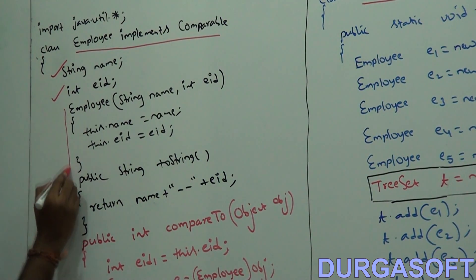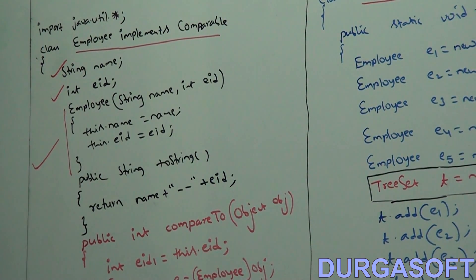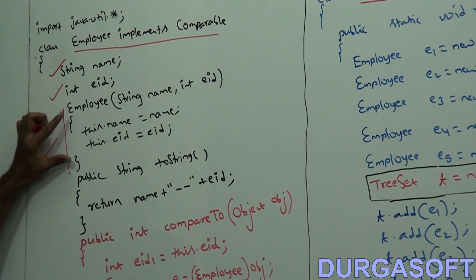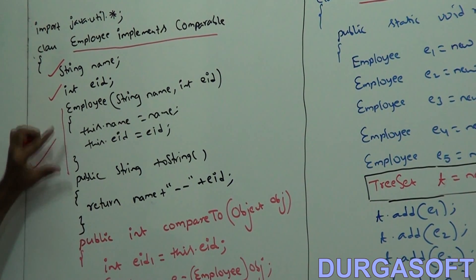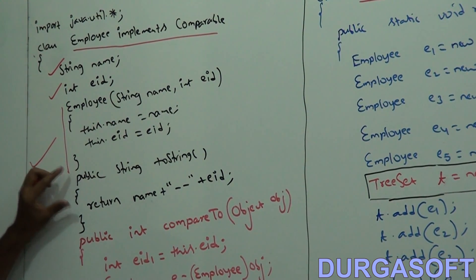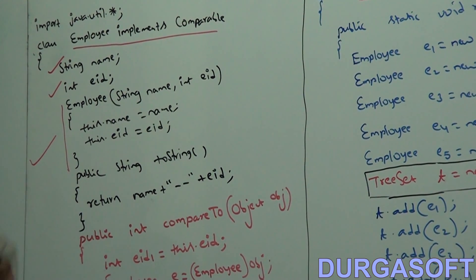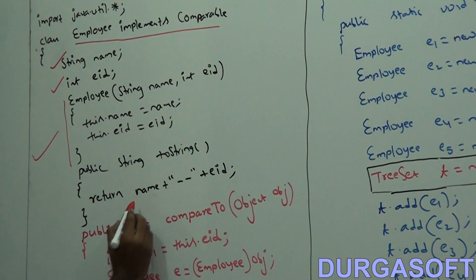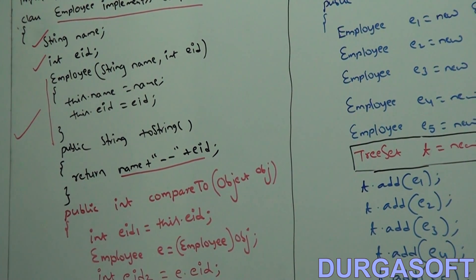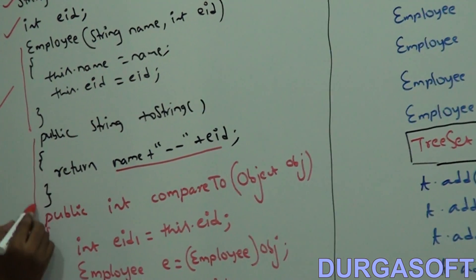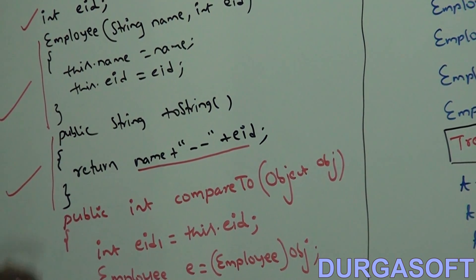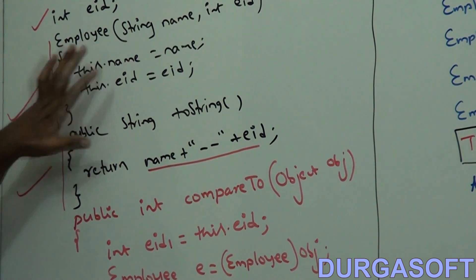The constructor is used to provide values for name and ID. The toString method is overridden — whenever we print an employee object, it prints the name and employee ID. This is the Employee class behavior.